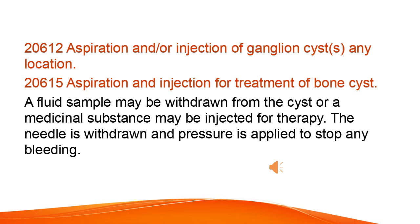Aspiration and/or Injection of Ganglion Cyst, Any Location. Aspiration and Injection for Treatment of Bone Cyst: a fluid sample may be withdrawn from the cyst, or a medicinal substance may be injected for therapy. The needle is withdrawn and pressure is applied to stop any bleeding.